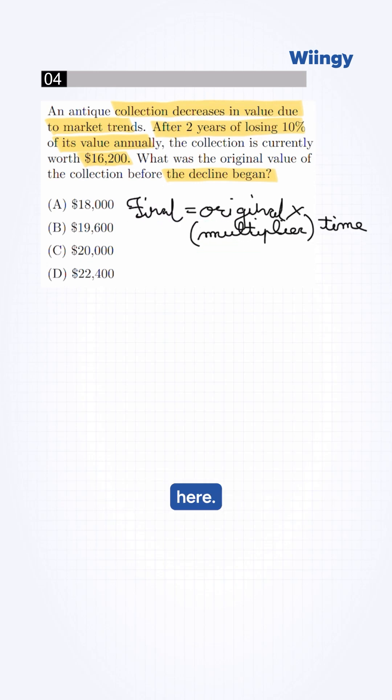Here, final amount is basically 16,200. Original amount is x. Rate is 10%, which will convert into 0.10 in decimal.